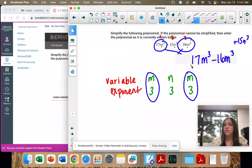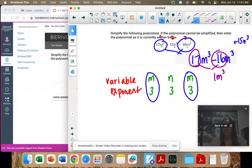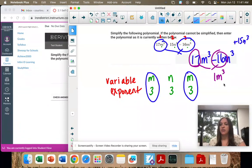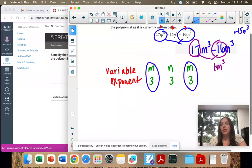So we're only combining the coefficients. 17 minus 16 is one. And then m to the third is just once now because we're combining them. We don't want to write the one that's an invisible one. It's just going to be m to the third power.